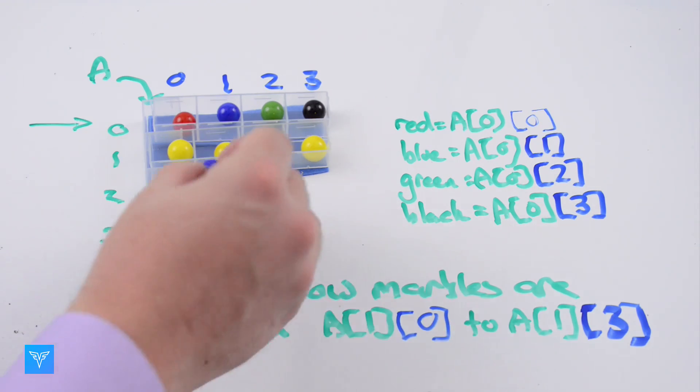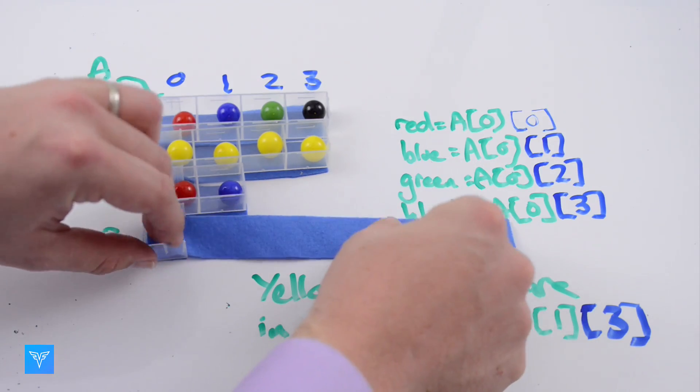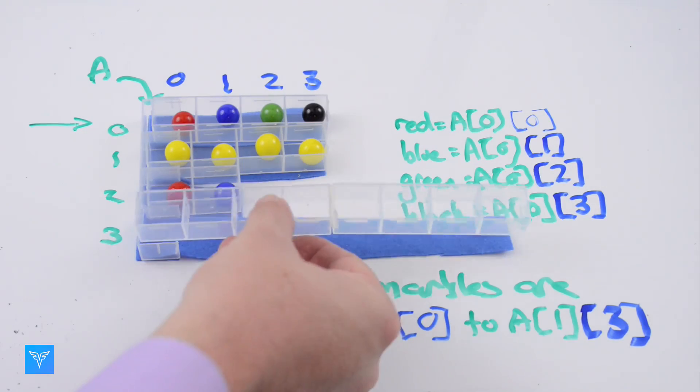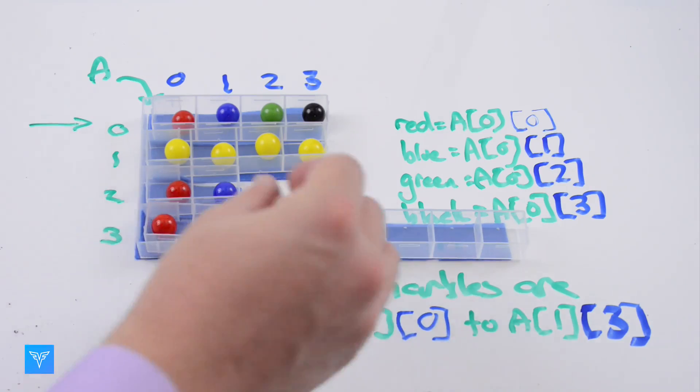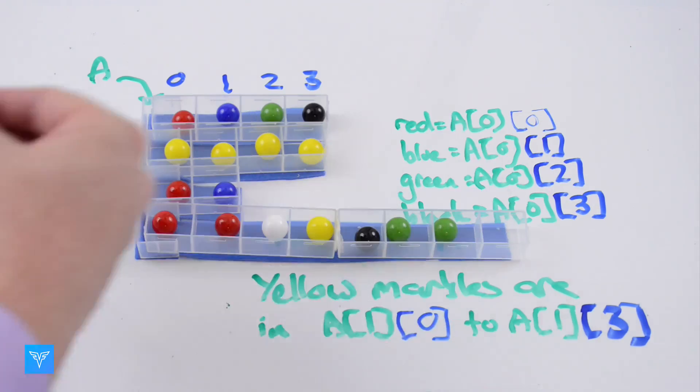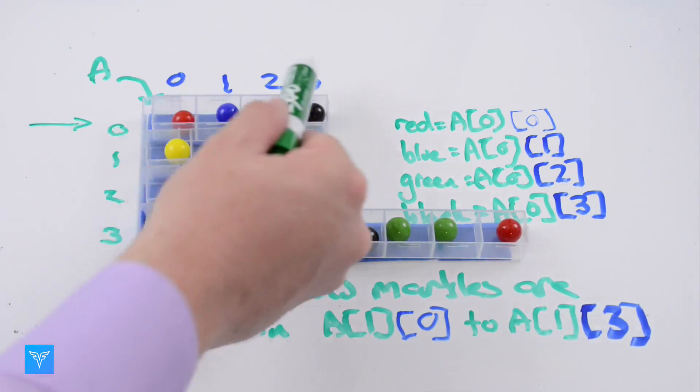We could have A2 be an array with only two elements and A3 be an array with eight elements. Notice this array will have more indices than 0, 1, 2, 3, so we go ahead and include indices 4, 5, 6, and 7.